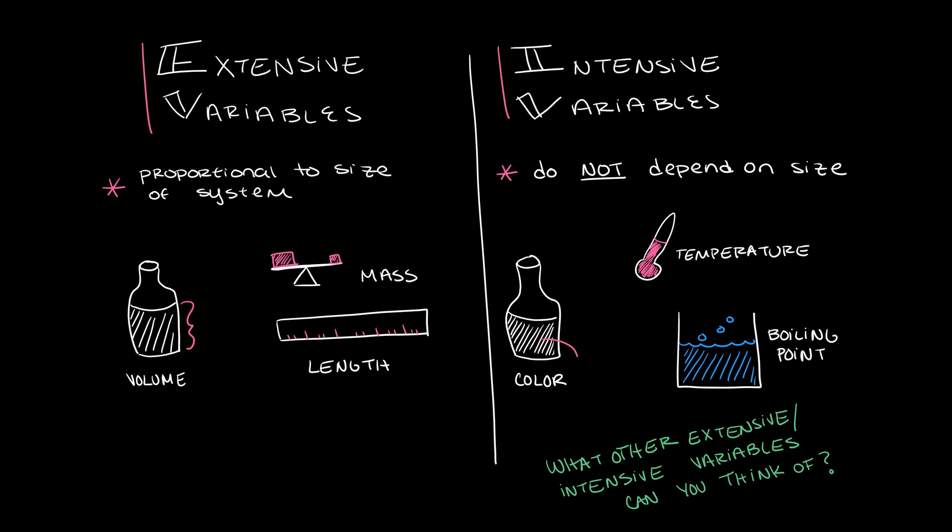Now imagine you put exactly the same two systems of gases side by side and break the wall between them to create one large system. Which variables are we changing? The common extensive variables are volume, number of moles, and energy.